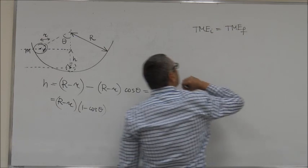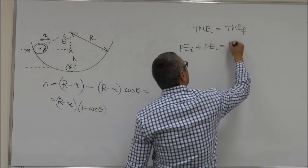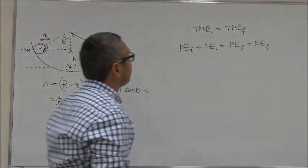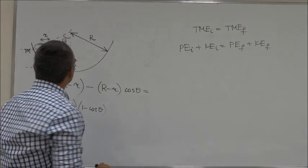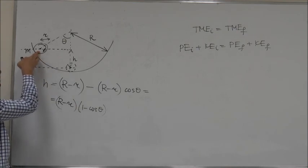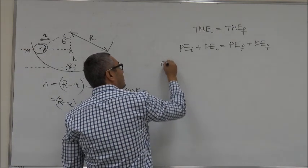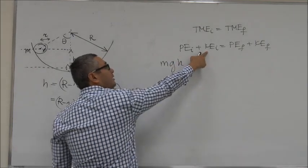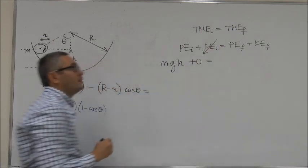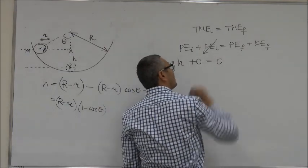Total mechanical energy initial equals total mechanical energy final. This is potential energy initial plus kinetic energy initial equals potential energy final plus kinetic energy final. Potential energy initial is equal to mgh. Kinetic energy initial is zero. In the final state, which is at the bottom, potential energy is equal to zero.